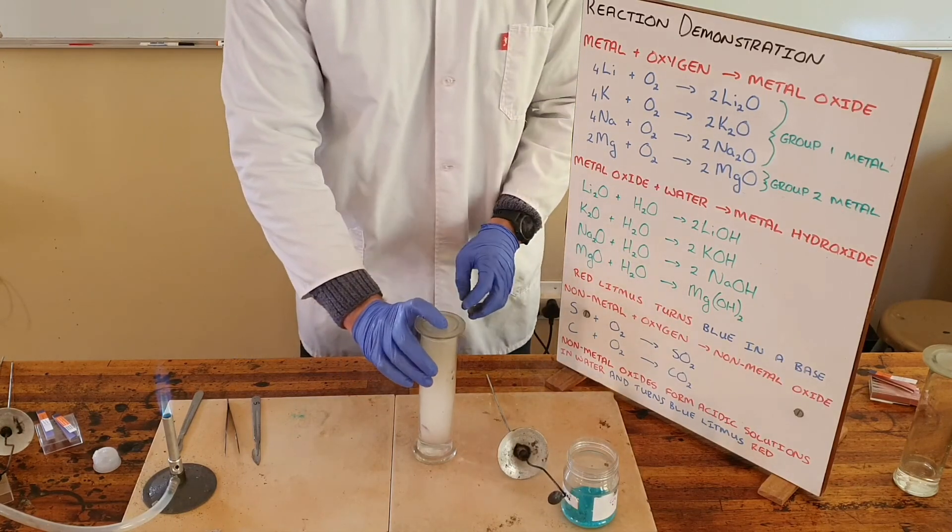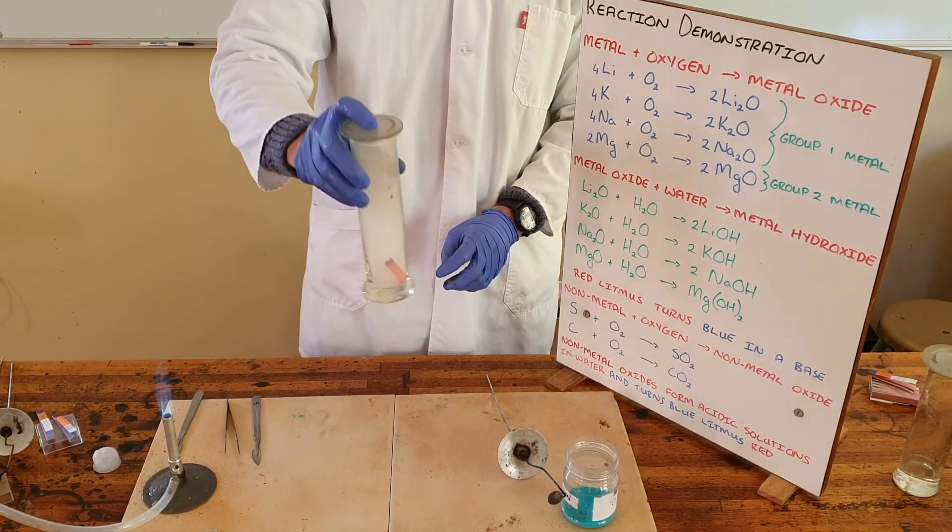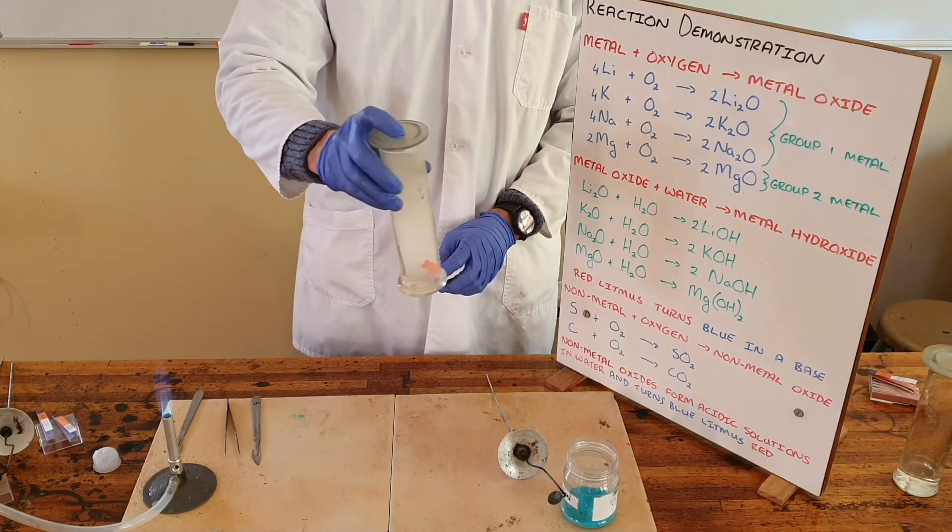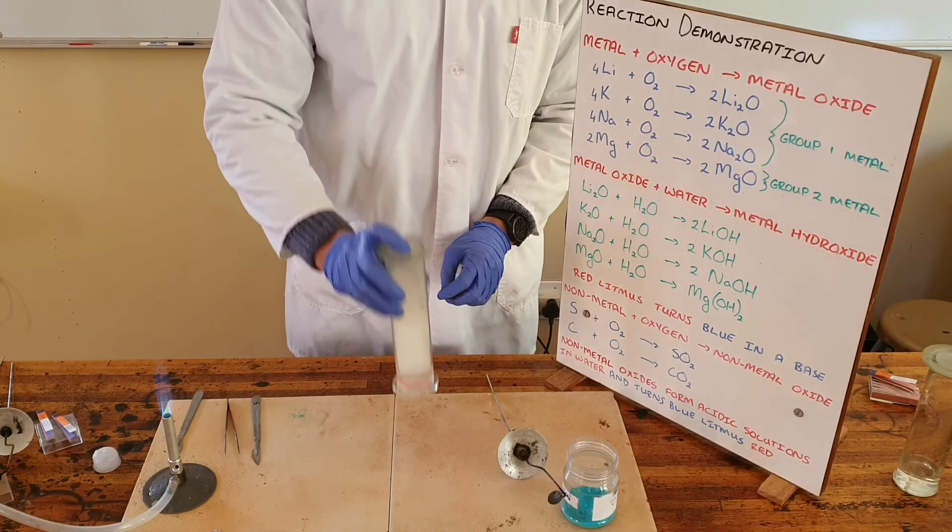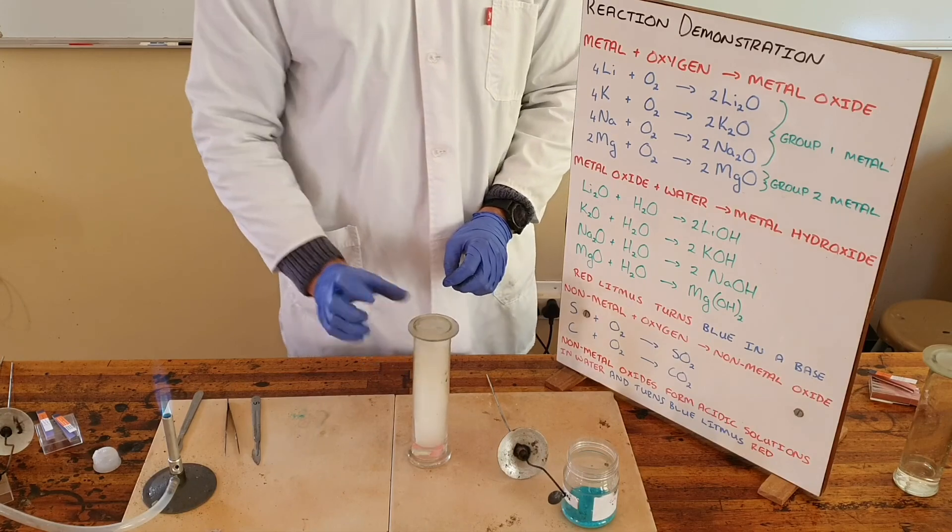So we can see immediately the blue litmus turns red which tells us that the solution that is formed here is an acidic solution.